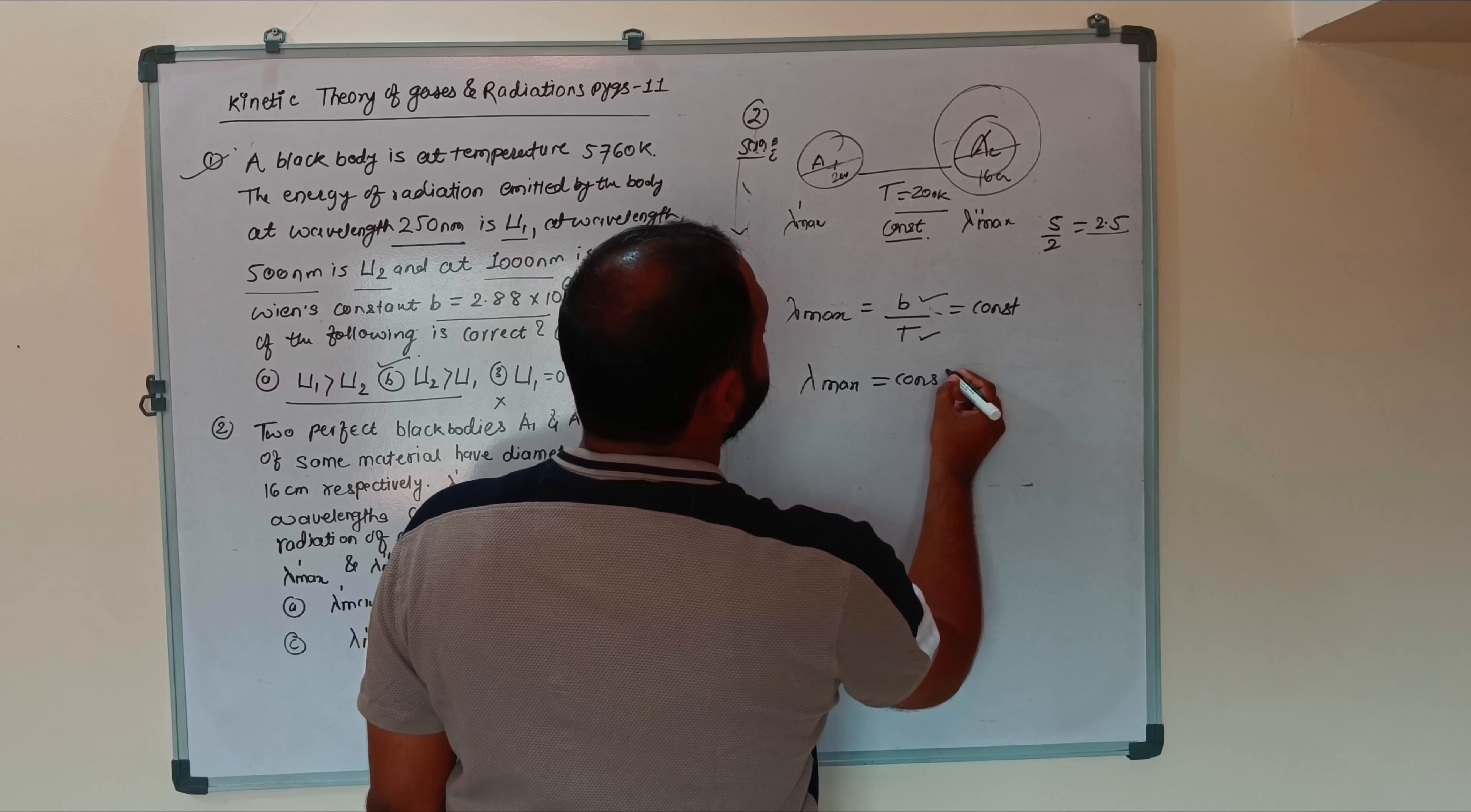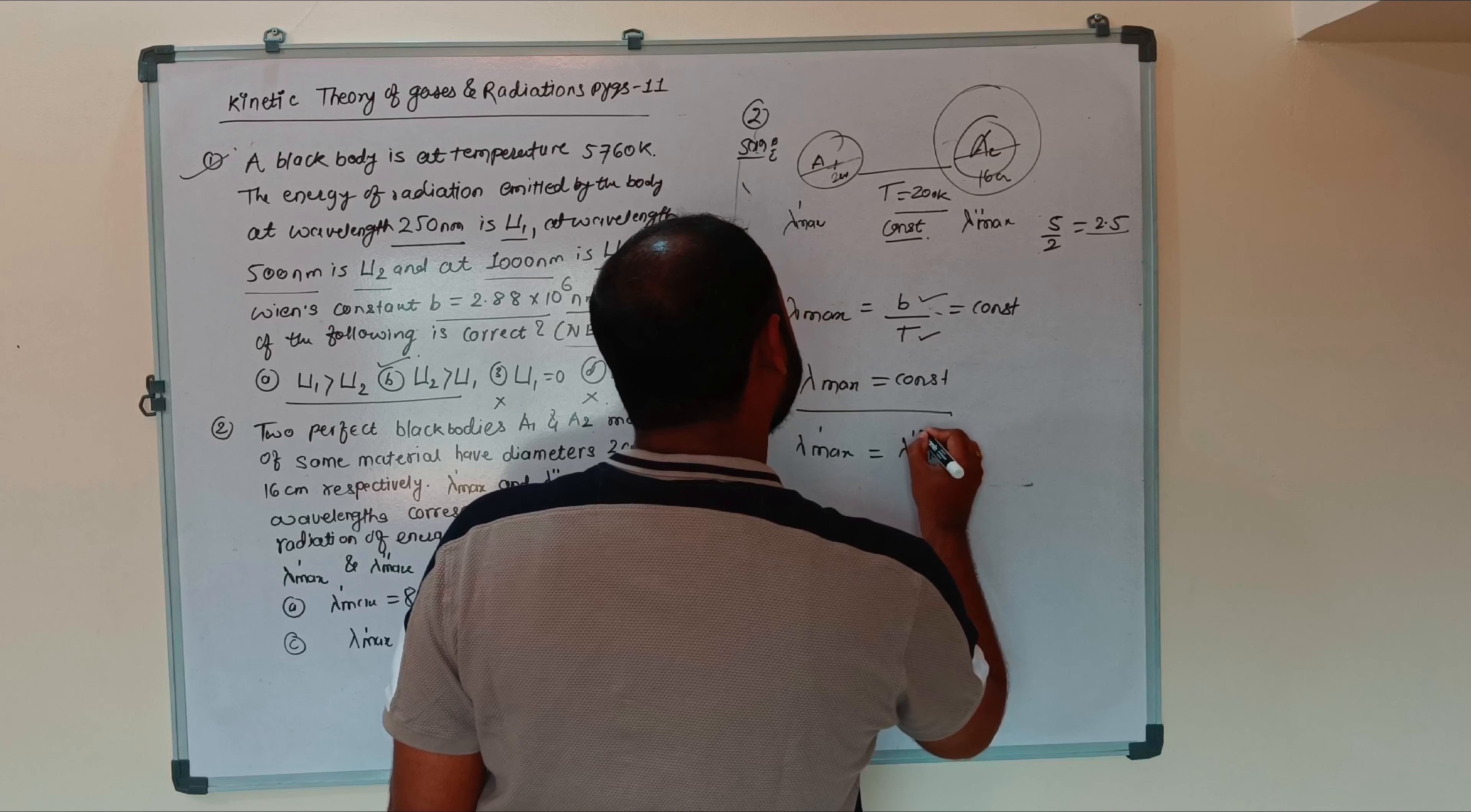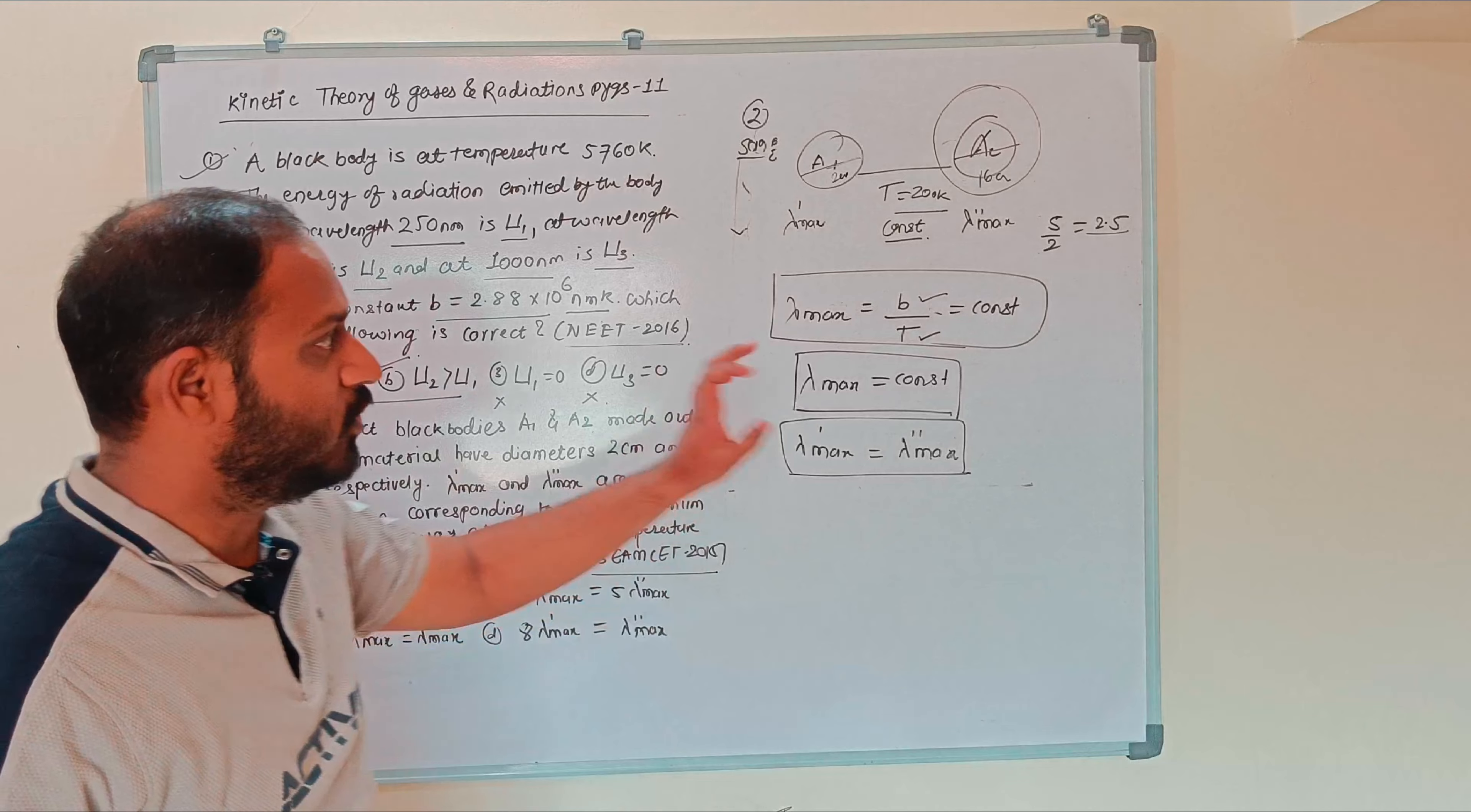Therefore lambda max equals constant. When lambda max prime and lambda max double prime are both constants at the same temperature, lambda max prime equals lambda max double prime. The maximum wavelengths corresponding to energy are the same. Option number third is correct for the second numerical.